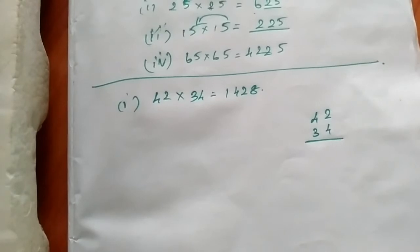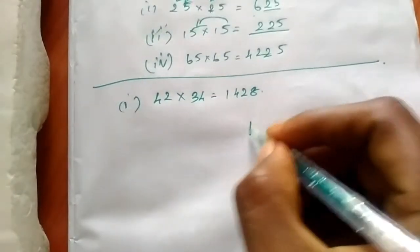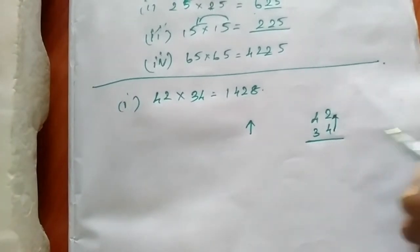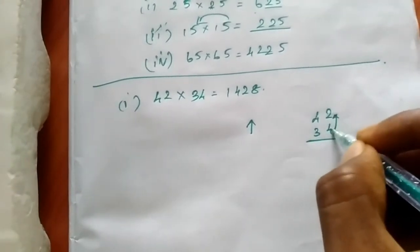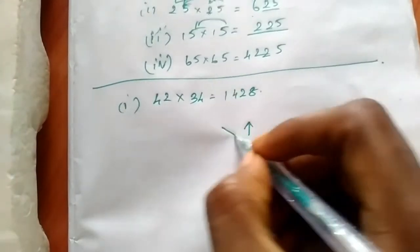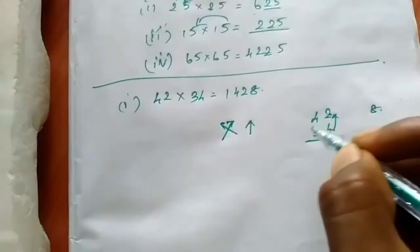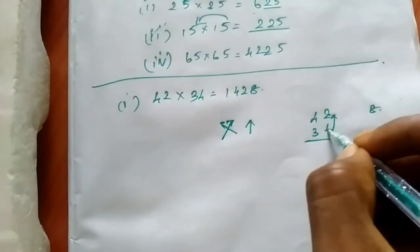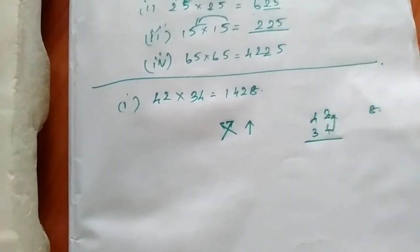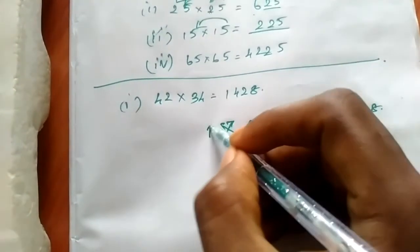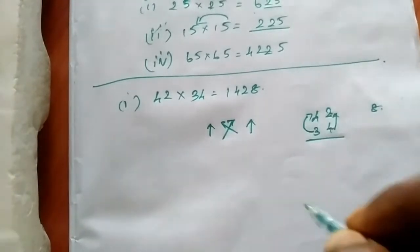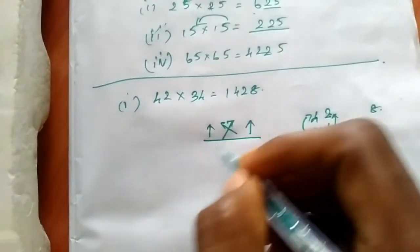First, this arrow represents this number. Multiply 4 into 2 is equal to 8. This arrow represents: 4 x 4 is 16, plus 3 x 2 is 6. This arrow represents: 4 x 3 is 12. This is the arrow's function.